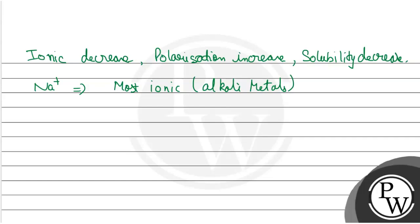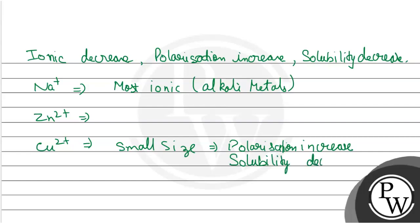Next we have Cu2+. Now, this Cu size is small, small size. So, this is what our polarization is. Polarization will increase and ionic character will decrease.